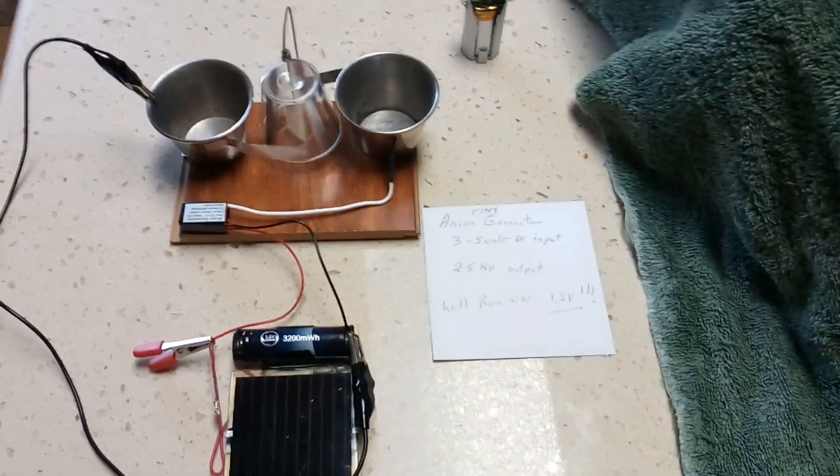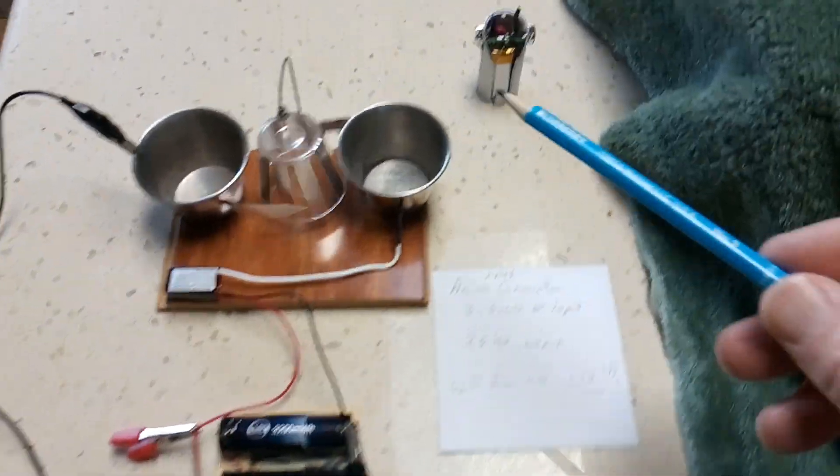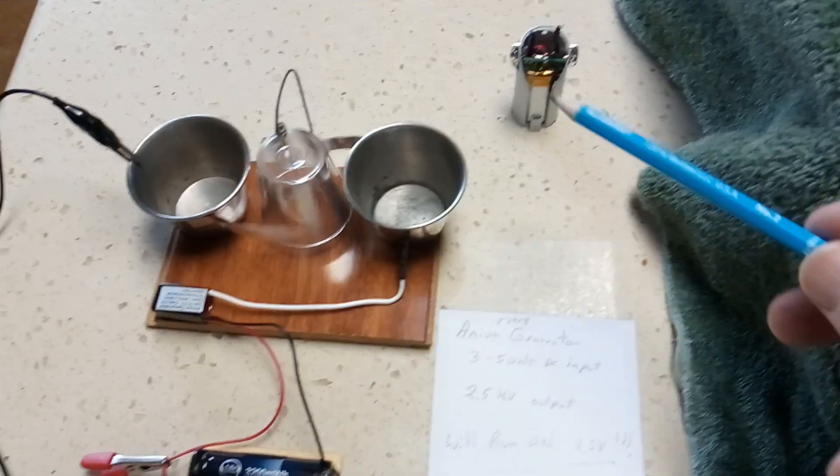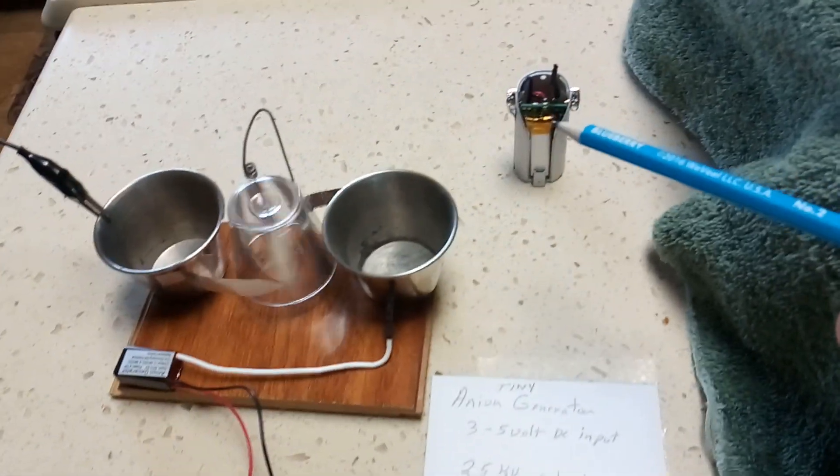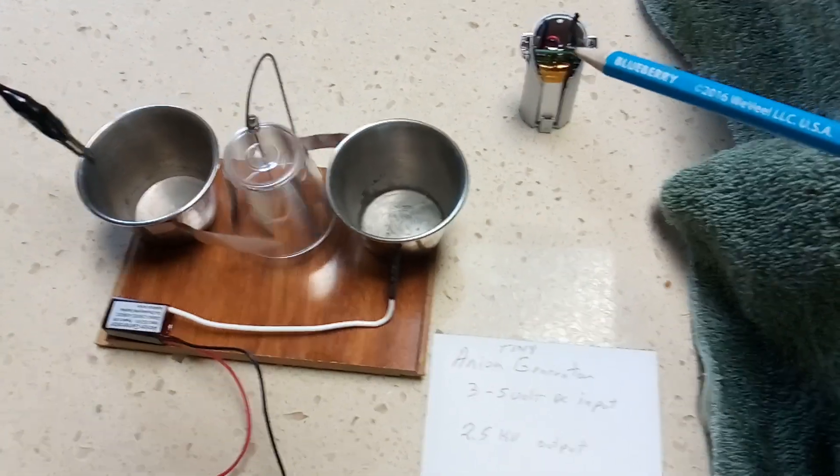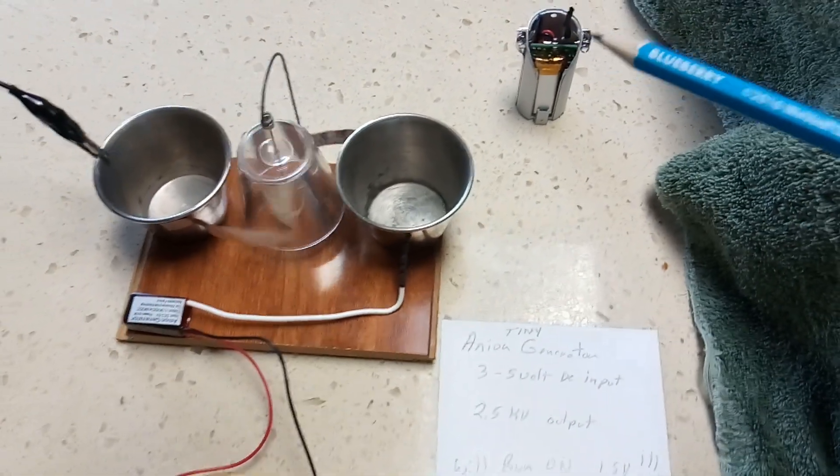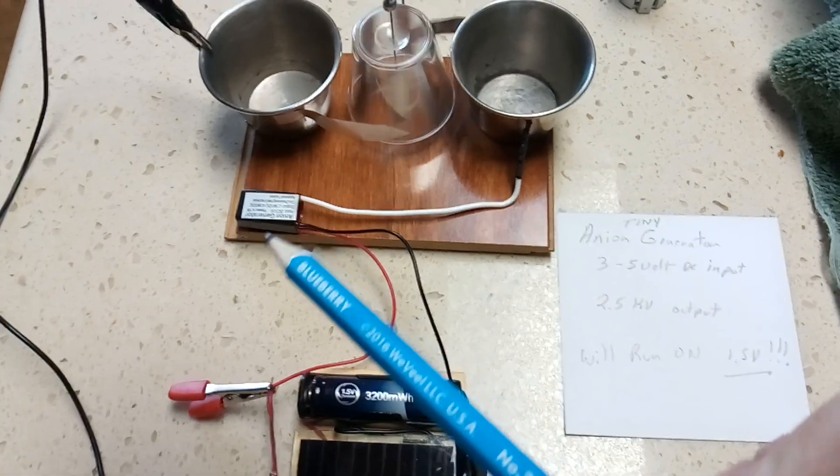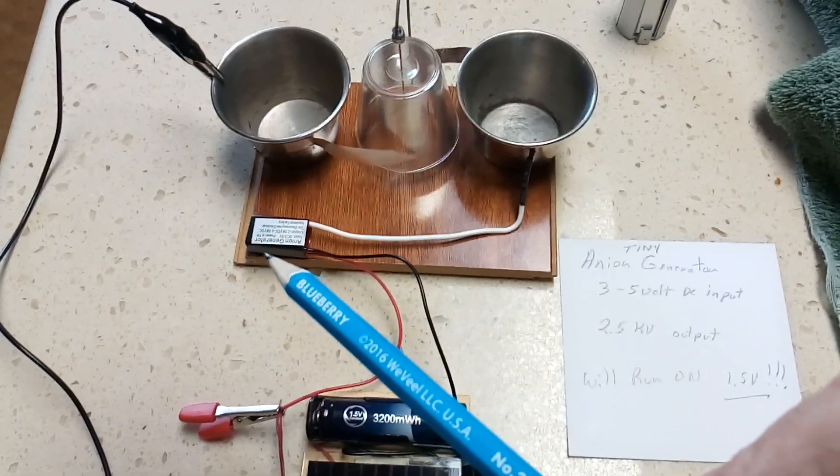Okay, here was a great find on this little negative ion generator, the necklace one that I've been showing in a bunch of videos. I pulled it apart and down inside was a tiny anion generator, negative ion generator.